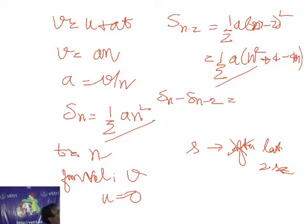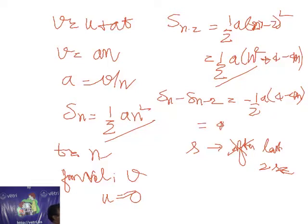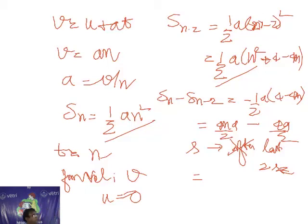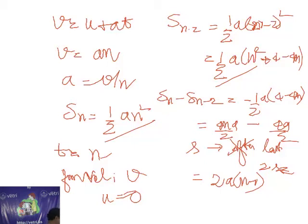After cancellation, we are left with minus half a times (4 minus 4n), which gives 4an divided by 2 minus 4a divided by 2. Taking 2a outside, the distance covered in the last two seconds is 2a times (n minus 1).